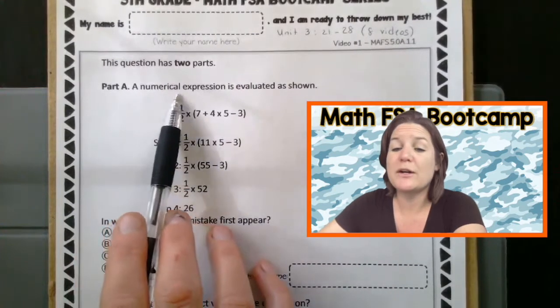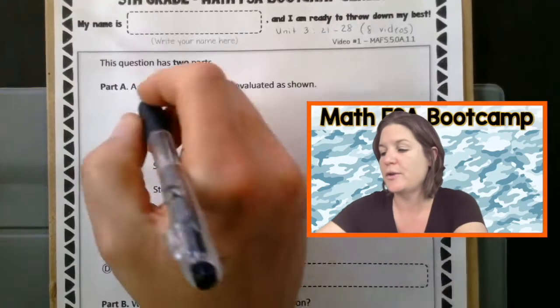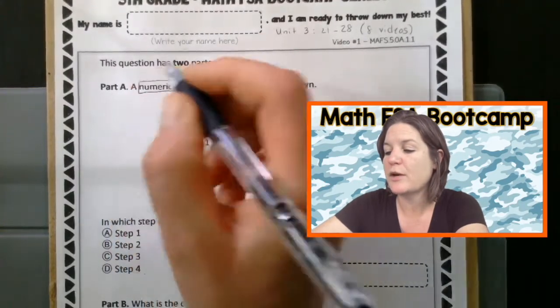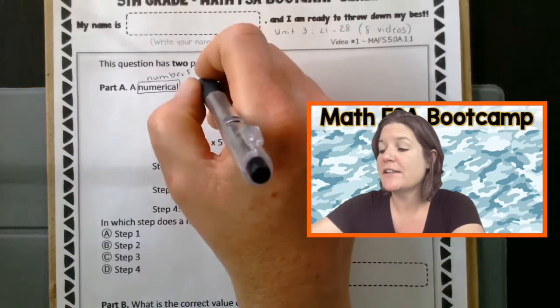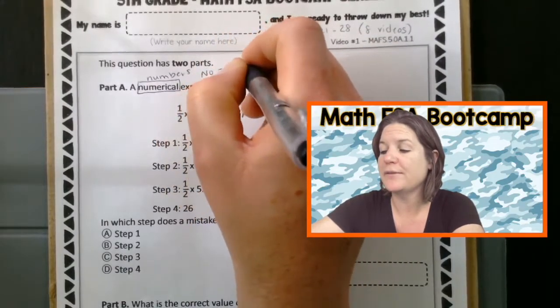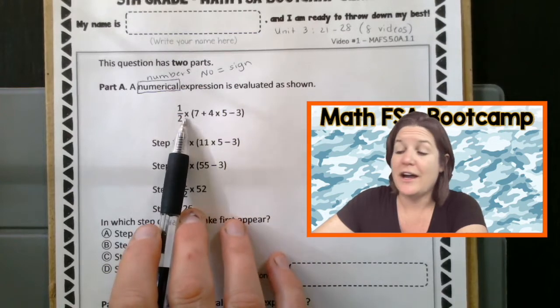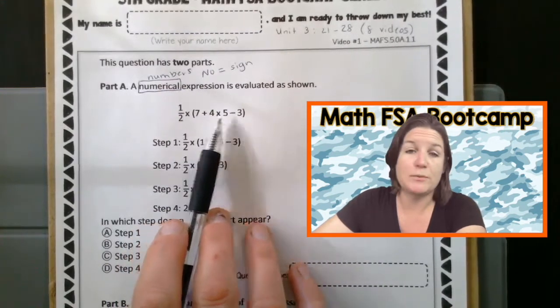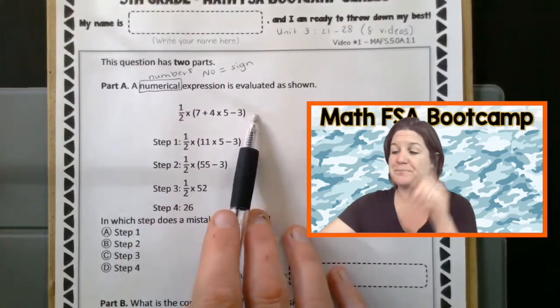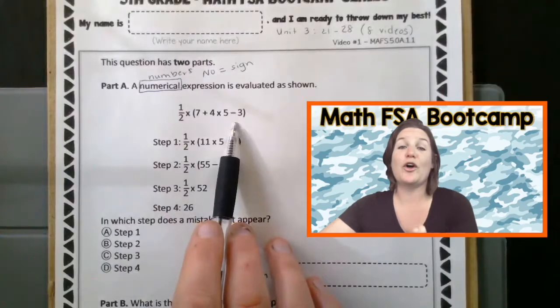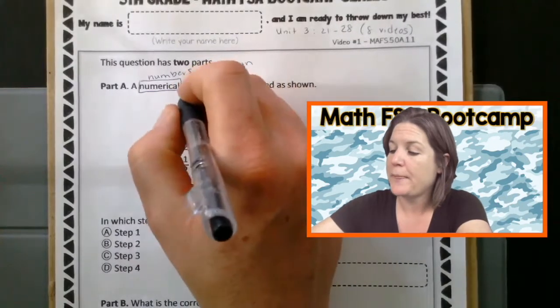It says this question has two parts. Part A says that a numerical expression is evaluated as shown. Oh my gosh. With a fancy vocabulary. Let's tackle that first. So a numerical expression, this means that it has numbers, not words, but numbers. And an expression means that there is no equal sign. There's no equal sign there. So if you're looking here, you just see numbers and you see symbols like multiplication, addition, multiplication, subtraction. There are just numbers and symbols, which makes this a numerical expression because there's no equal sign. If there was an equal sign, this would be called an equation.